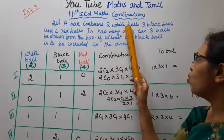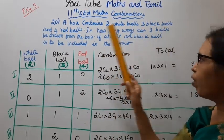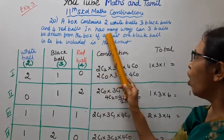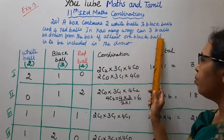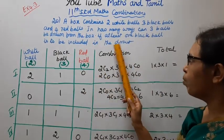A box contains 2 white balls, 3 black balls, and 4 red balls. In how many ways can 3 balls be drawn from the box if at least 1 black ball is to be included in the draw?